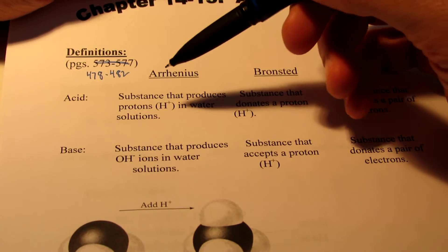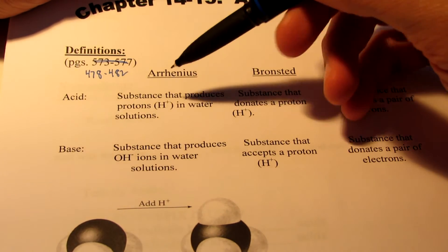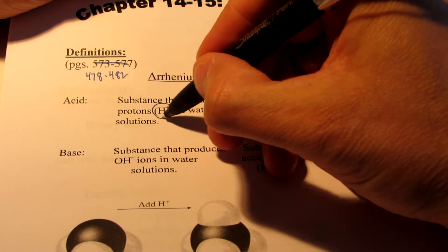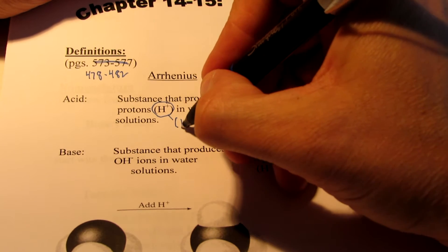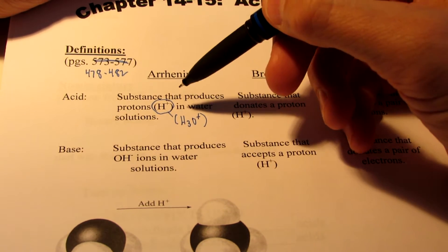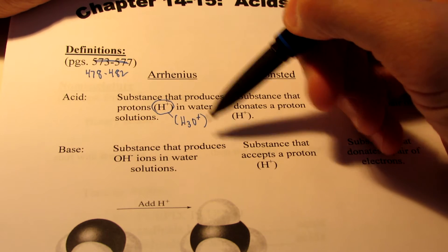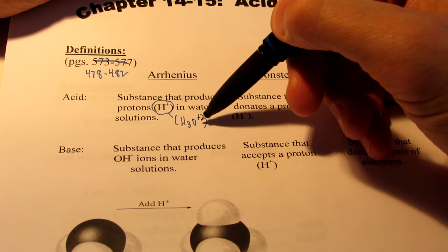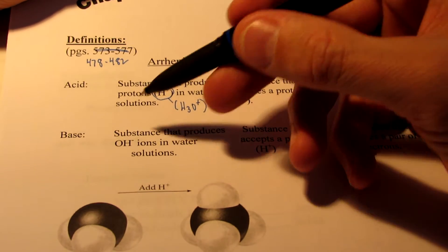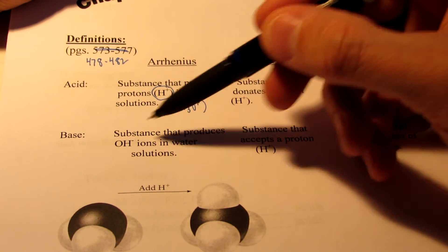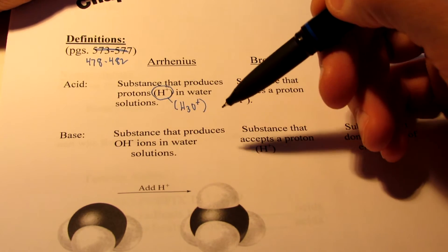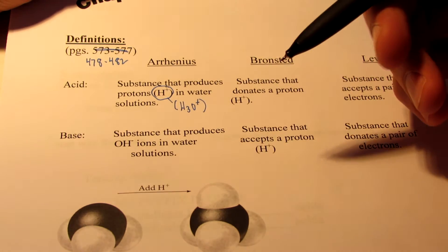Quite simply stated, an acid is something that when I place it in water, it produces protons. Protons are also written as H+ or sometimes H3O+. If they can produce a proton in water or H3O+ in water, we call them acids. Bases are substances that produce hydroxides in water solutions. If we place something in water and it dissociates to produce hydroxides, we consider it to be basic.